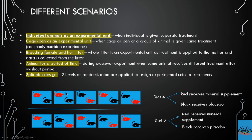In the split-plot design, the experimental unit differs by factor: for the diet factor (Diet A vs. Diet B), the cage is the experimental unit, but for the mineral supplement factor, the individual mouse is the experimental unit. Whenever you try to understand experimental units, you must go into the experiment and understand what you are trying to achieve and identify your experimental units accordingly.